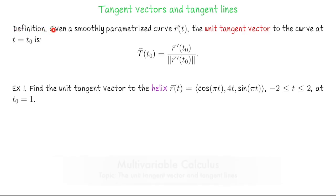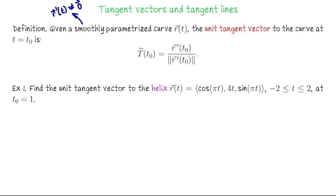So first the definition. Given a smoothly parametrized curve R, the unit tangent vector to the curve at some specific time value t₀ is T-hat — that's the notation we use — at t₀, which equals the velocity vector R' at t₀ divided by the speed, in other words R' divided by the magnitude of R'. Now normally when we divide we have to worry about dividing by zero, but recall that a smoothly parametrized curve satisfies the property that R' is never the zero vector, so our speed is never zero and we won't be dividing by zero.